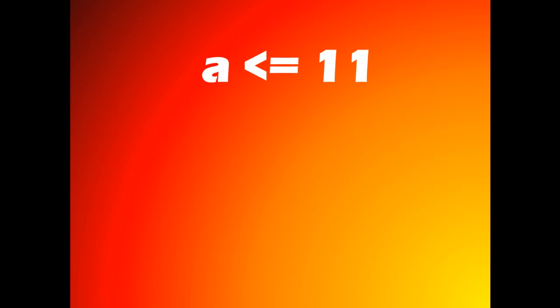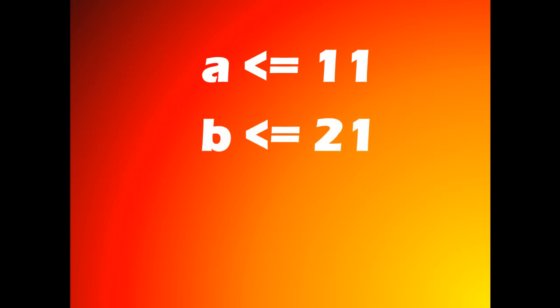It is used like this: a is less than or equal to 11, which means a is 11 or less; b is less than or equal to 21; and c is less than or equal to 54. This concludes the tutorial.